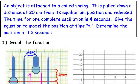Give the equation to model the position at time t. So we're going to try to come up with what the equation is, either sine or cosine function. And then where would the spring be when we let it go and it's gone for 1.2 seconds. So that's our objectives here.